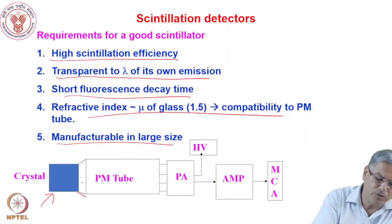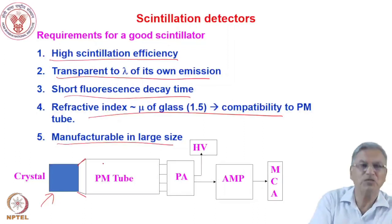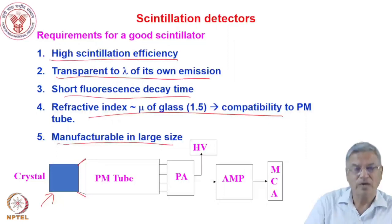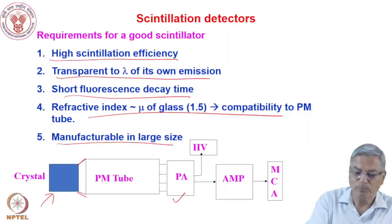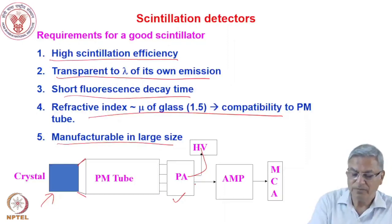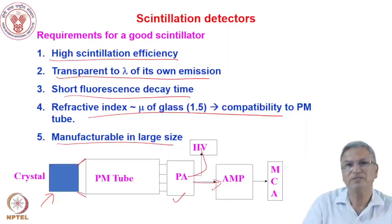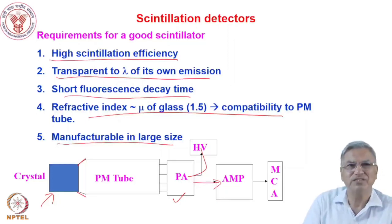You optically couple the crystal with the PMT. If you have a 1 inch by 1 inch crystal and a 2 inch by 2 inch PMT, you need optical coupling materials. Then you have the pre-amplifier, the PMT with its bleeder circuit, and apply high voltage to the anode of the PMT. The pre-amplifier signal is amplified using a signal amplifier, and the analog output can go to a pulse height analyzer or a timer scaler. This is the block diagram of a scintillation detector; the heart lies in the crystal.